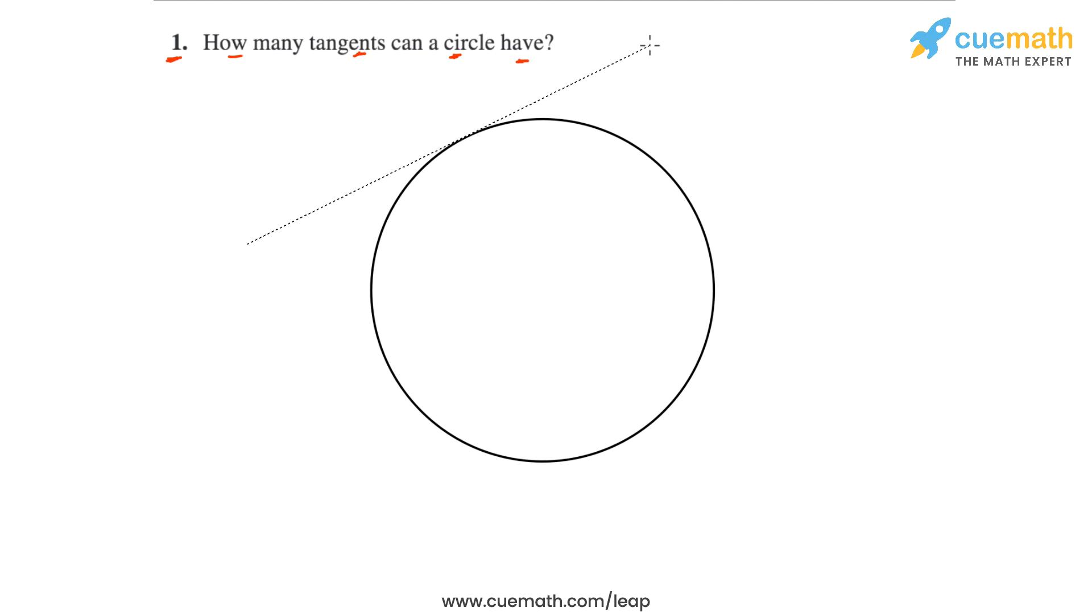Let's say this line, this line here is also a tangent, this line here, and this line here. Let's call these points of contact A, B, C, and D.